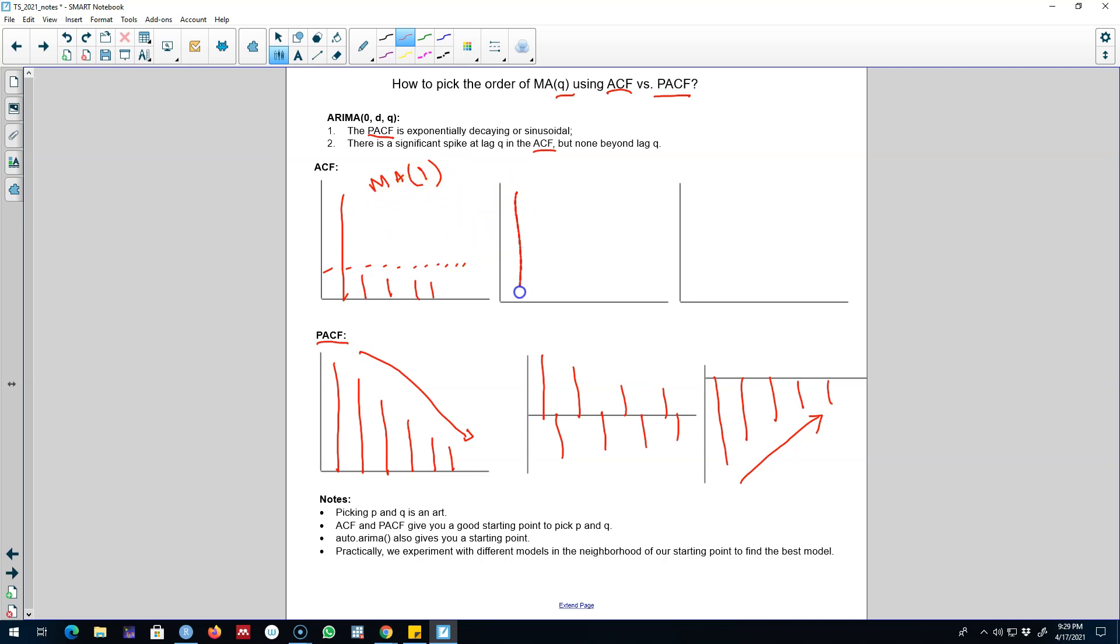On the other hand, if we have two statistically significant correlation coefficients and no significant spike after the two spikes, we will pick an MA(2) model. Similarly, if we have three significant spikes and no statistically significant spike after the third spike, we will pick an MA(3) model.